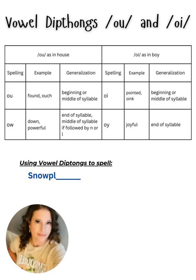Just like the spellings last week, I can use the generalizations to guide me in spelling a word. For example, if I want to spell 'snowplow', I will first break it into syllables: snow-plow. I hear the OW sound in the second syllable, 'plow'. I hear the OW sound is at the end of the syllable. So I'm going to first write out what I think I know and leave the ending blank.